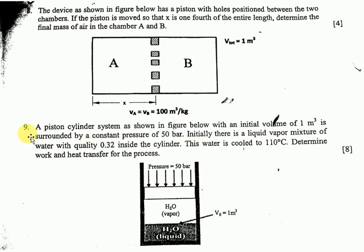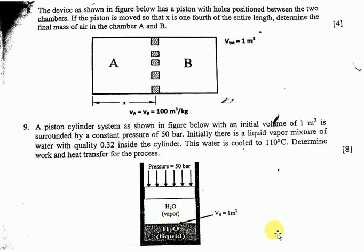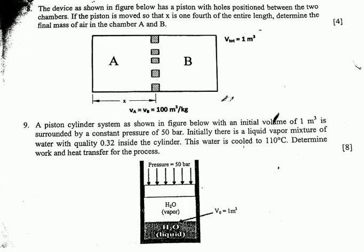Question number nine: a piston-cylinder system as shown in the figure has an initial volume of 1 cubic meter, heated at constant pressure of 50 bar. The initial state is a liquid-vapor mixture of water with quality 0.32. The water is cooled to 110 degrees Celsius. Determine the heat transfer for the process using the steam tables — this is from Chapter 3, properties of common substances.